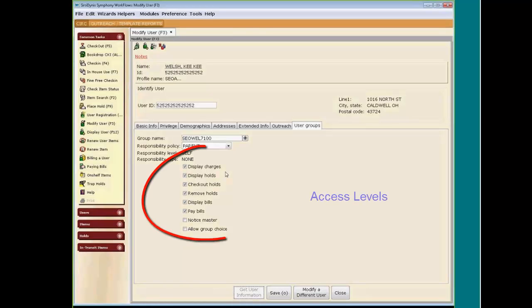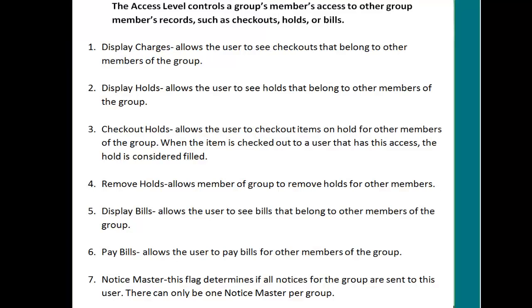The access level controls a group member's access to other group members' records, such as checkouts, holds, or bills. Display Charges: this option allows the user to see checkouts that belong to other members of the group. Display Holds: this option allows the user to see holds that belong to other members of the group. Checkout Holds: this option allows the user to check out items on hold for other members of the group. When the item is checked out to a user that has this access, the hold record is considered filled. This is very handy if you create a husband-wife group and they would like to be able to check out each other's holds.